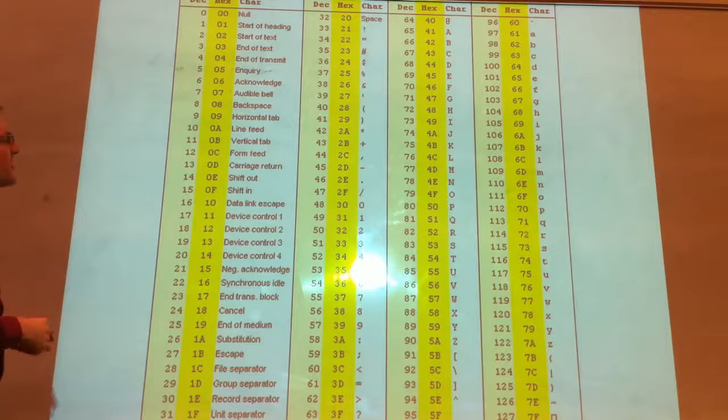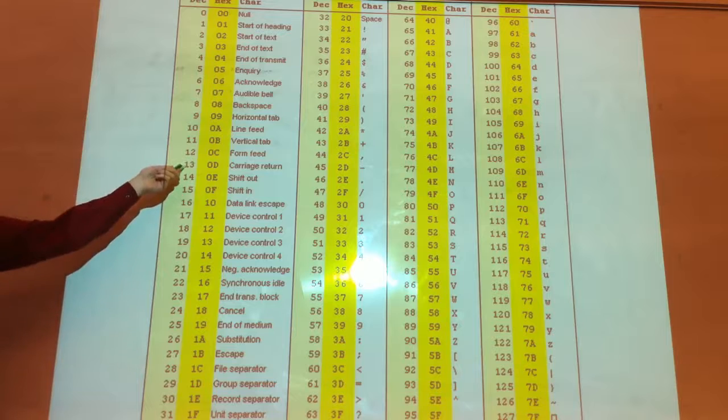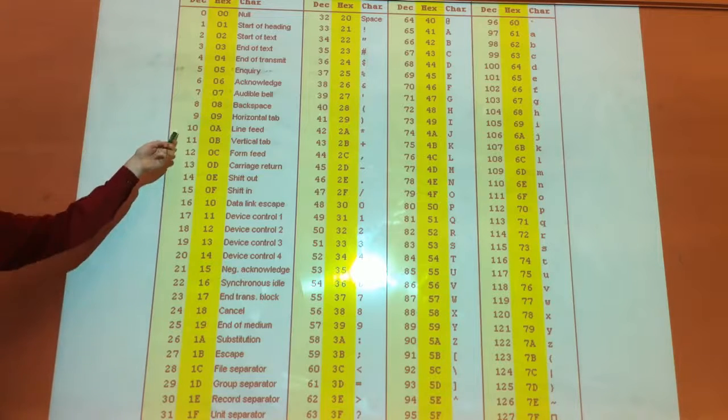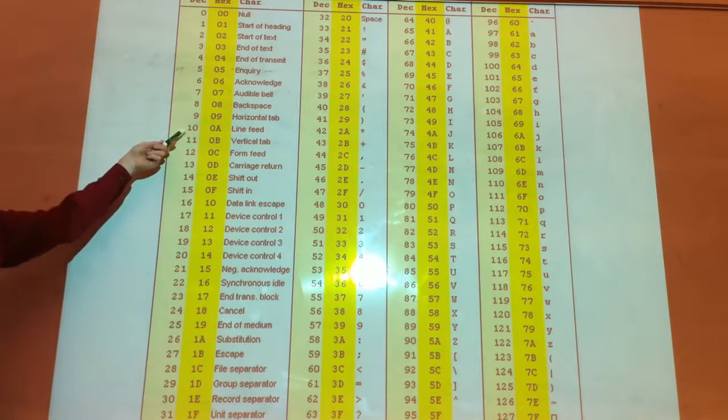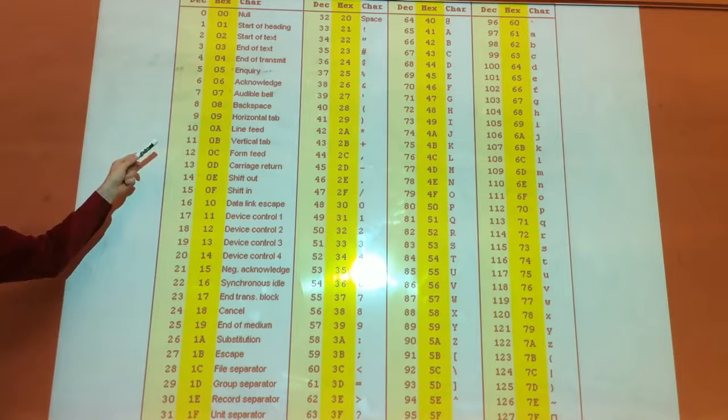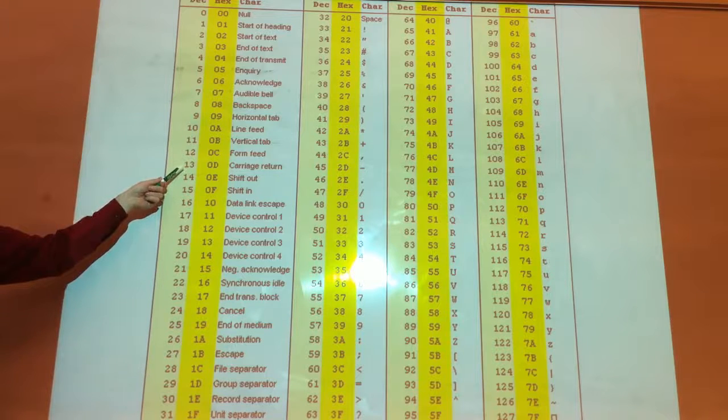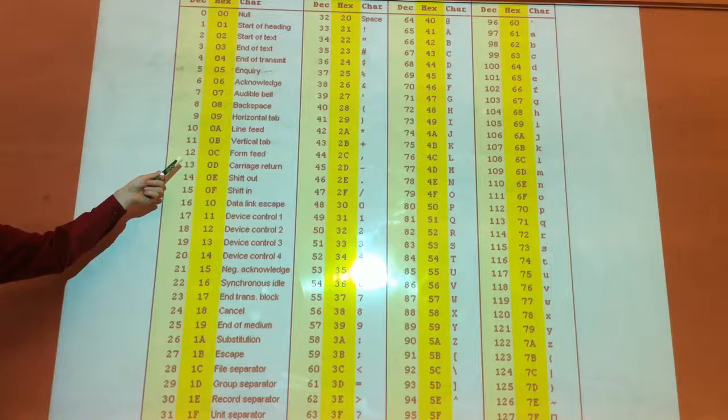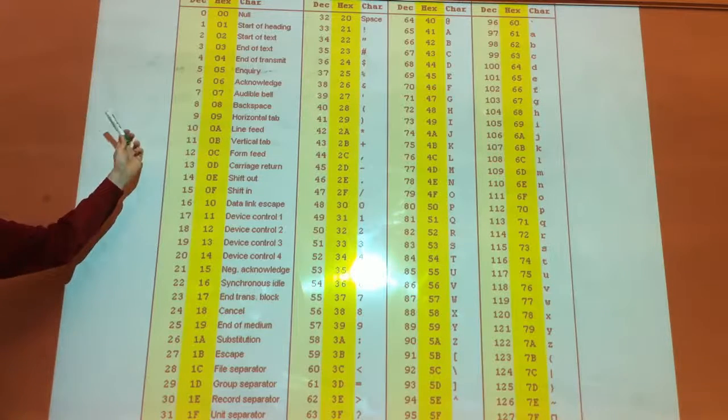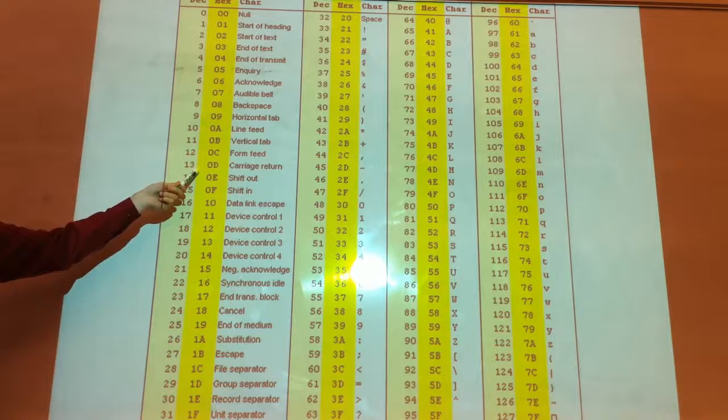Some of these, like I said, some of these exist in certain architectures. One of the problems some people might see is carrier return, new line feed. Windows requires a new line feed and then a carrier return to get a new space. Linux, you just have to do a new line. And I think a Mac, it's a carrier return to get a new line.